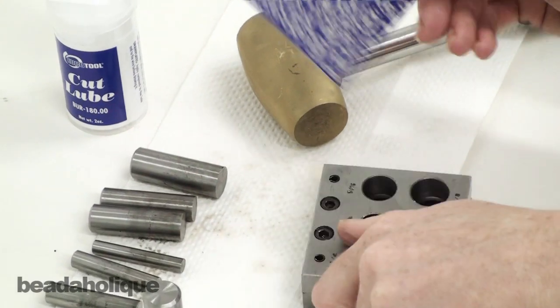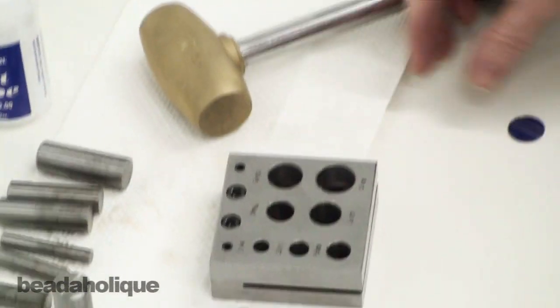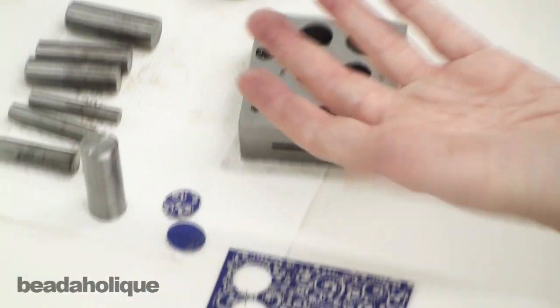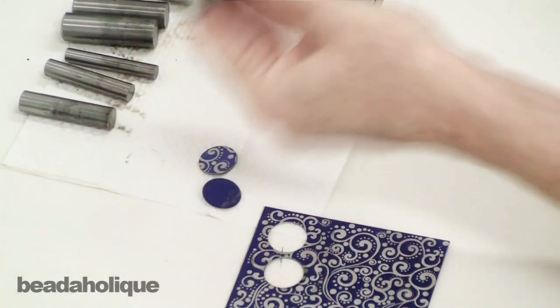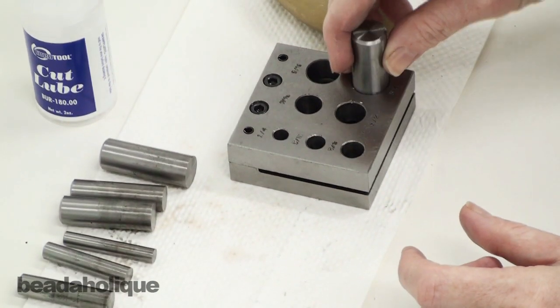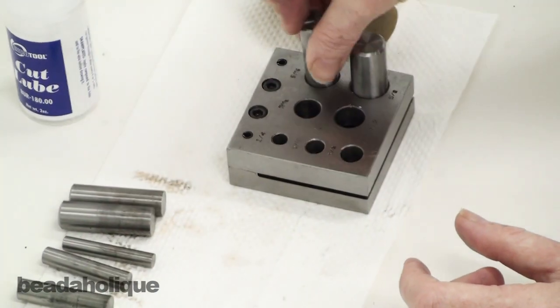So you can see our sheet here. We've got perfect holes which have been cut and it's very easy to do. Then for storage I would just go ahead, put your pieces back in place and then they'll be all ready for you the next time you want to use it.